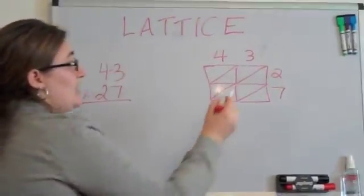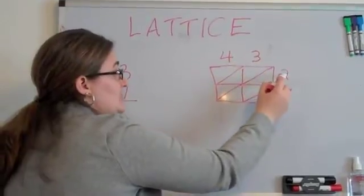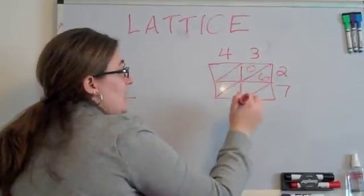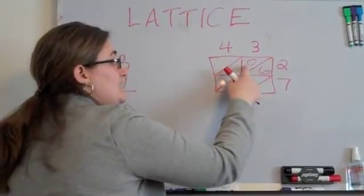Now, first we start multiplying the sides. 3 times 2 is 6, so I'm putting a 6 in this side and a 0 in this side because this side is the ones and this side is the tens.